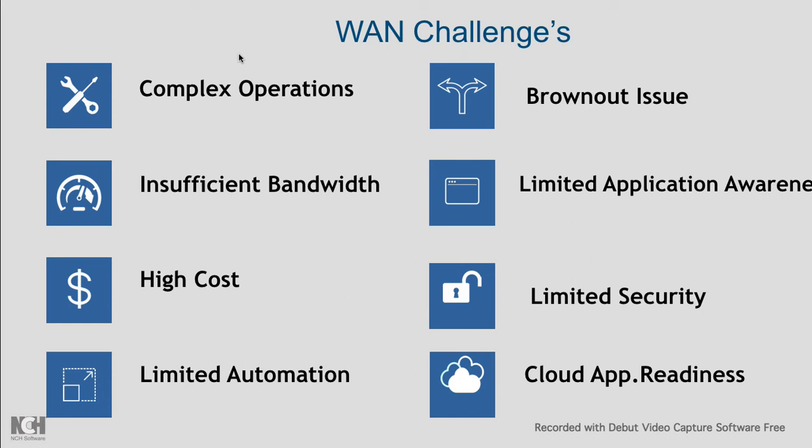Lastly, there is cloud app readiness. Every enterprise today is moving to the cloud, hosting generic applications on public cloud platforms like AWS, Azure, or GCP. Those applications need to be accessed with high performance and at lower cost since the enterprise is consuming them as a service. However, traditional WAN is not ready for this — most enterprises still use the legacy design of routing all traffic back to the data center, then backhauling to the public cloud.